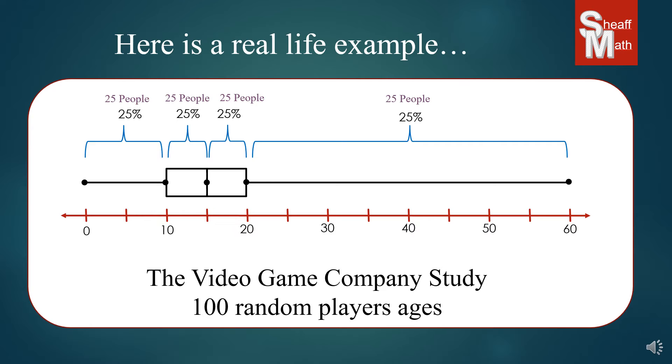Now how can this help the video game company? It's visually very obvious if you understand how a box and whisker plot works. The smaller the length is, the more concentrated the numbers are, the people in the survey. So this tells us that most of the players are between the ages of 10 and 20.